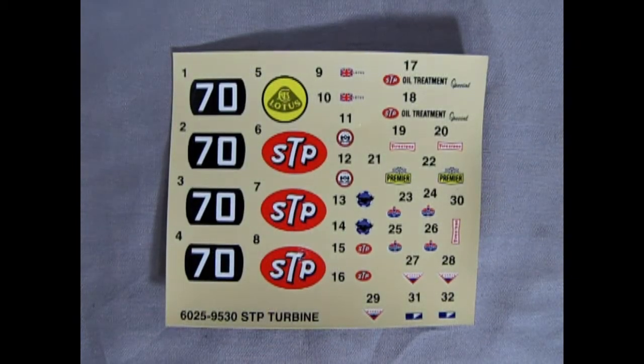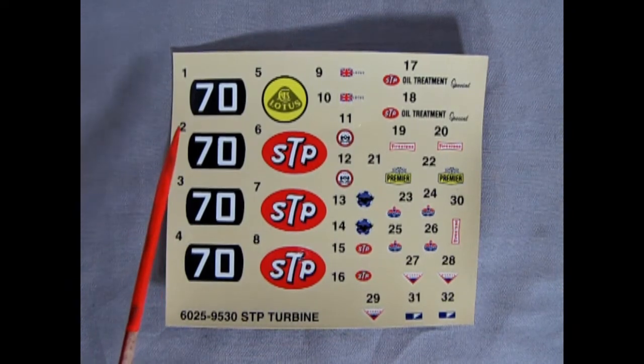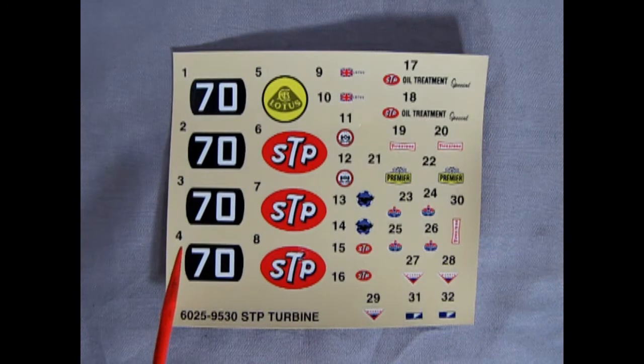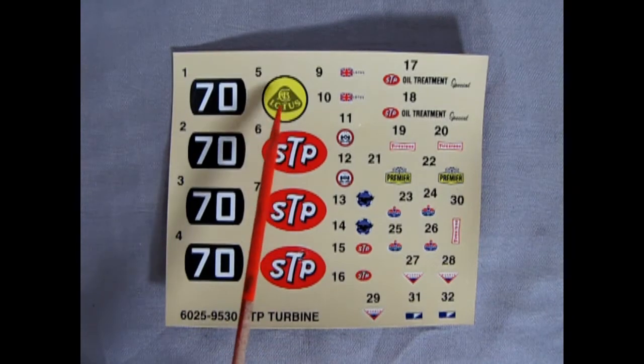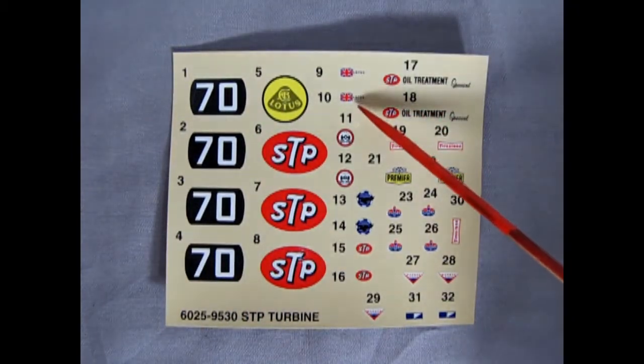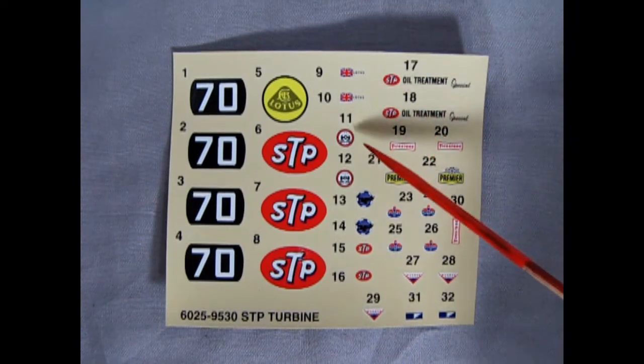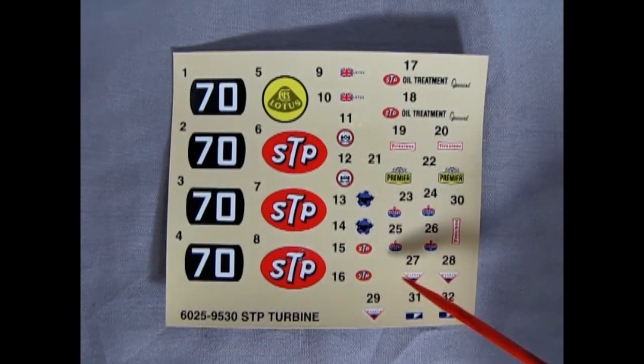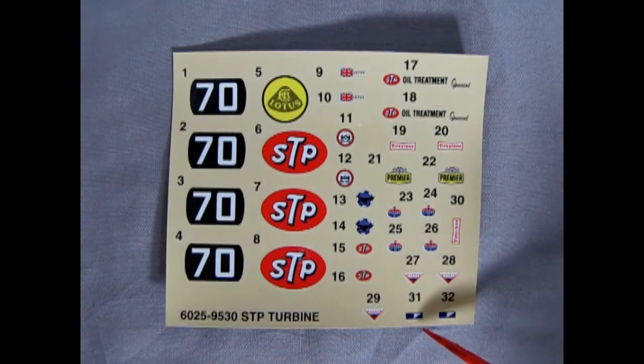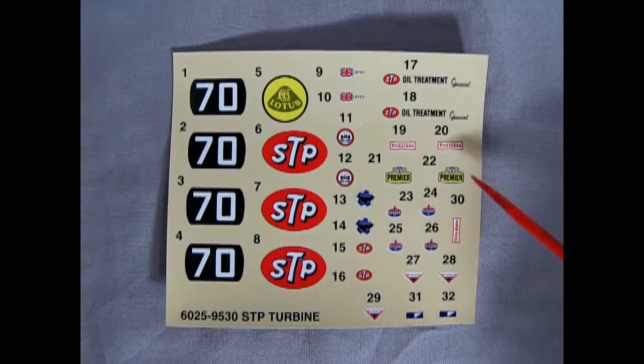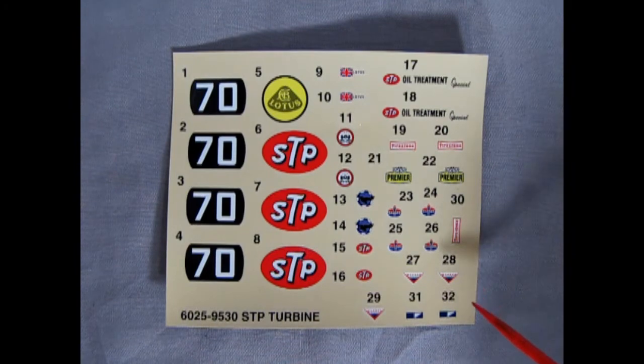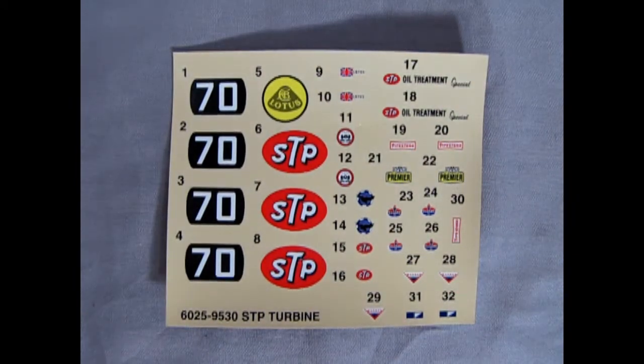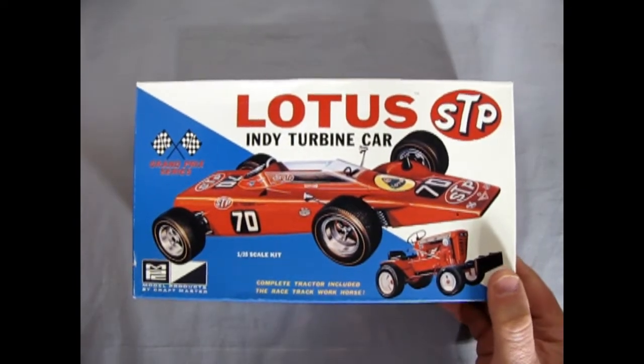And finally, we have the decal sheet for our STP turbine car. With the big number 70s on here, there is a lot of sponsors going on. Including STP. And then, of course, we've got our Lotus brand logo right there. As well as the little British flags with Lotus written on them. And then here's where we get into all our sponsorship decals. And as you can see, there are a lot. Including the little MPC Swish here. And the Firestone Premier, STP Oil Treatment Special. All this kind of stuff. So again, a very nice detailing work for our STP turbine car.